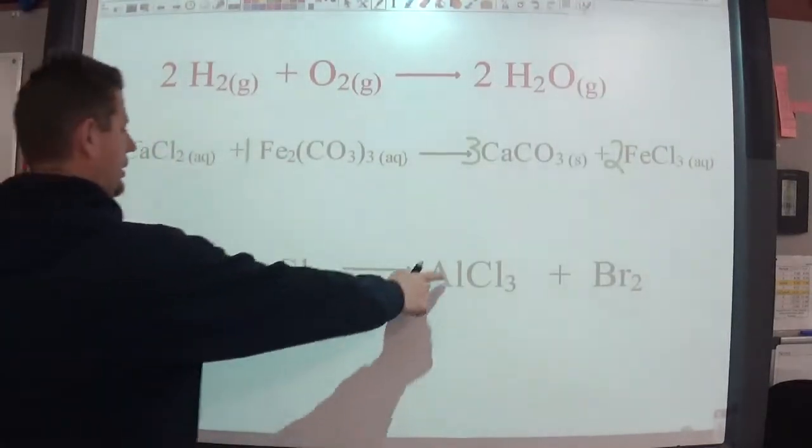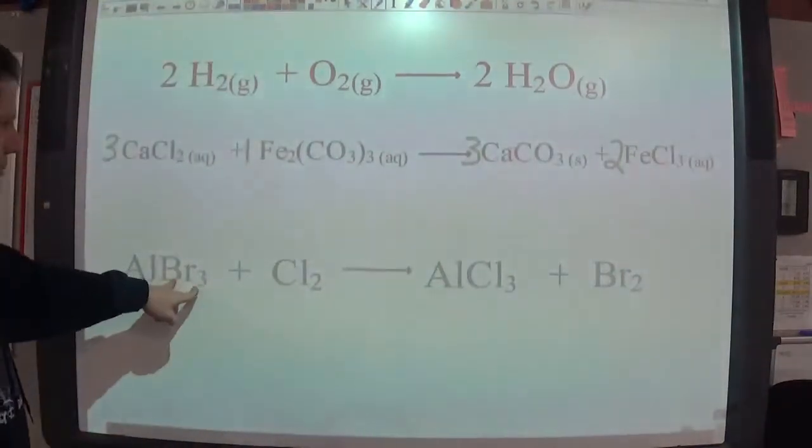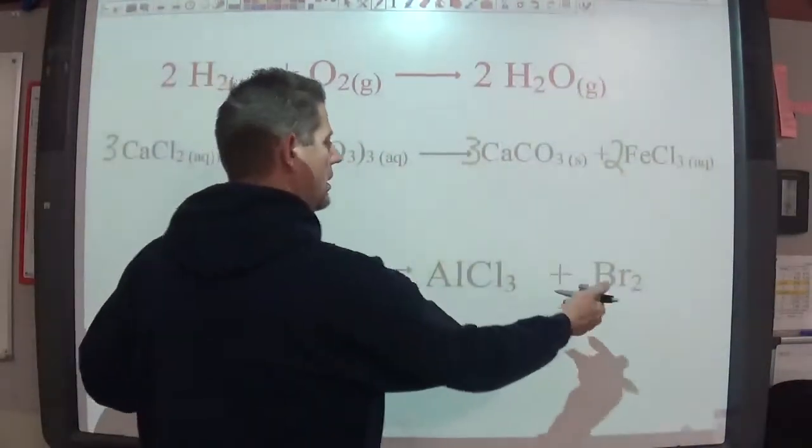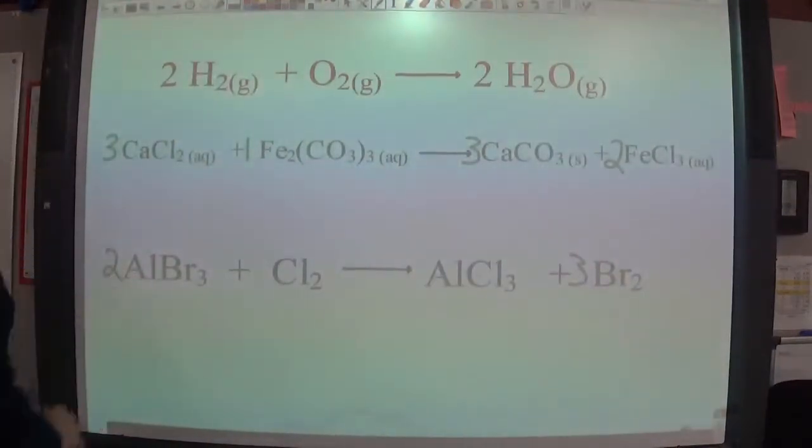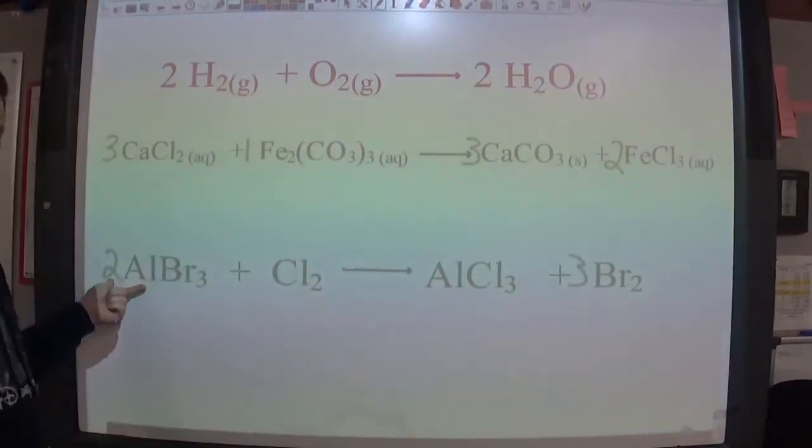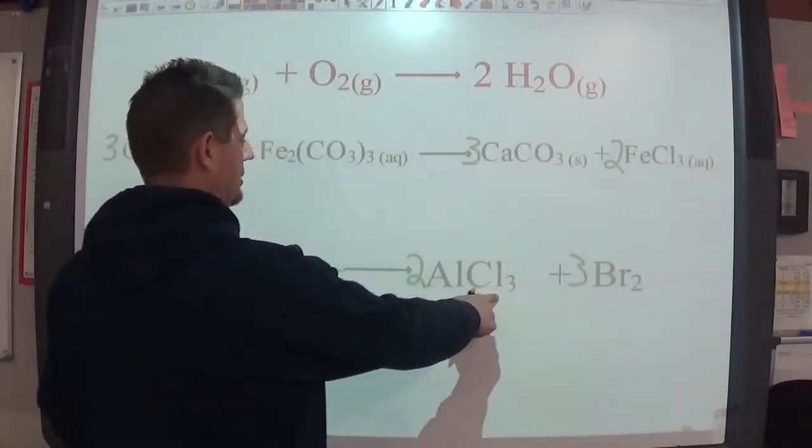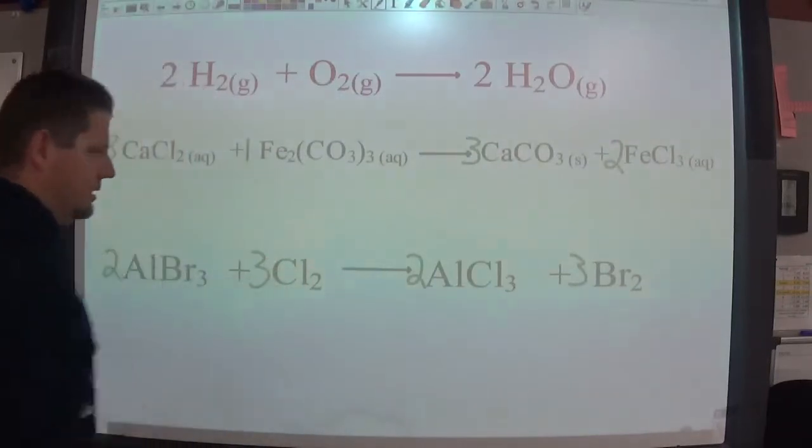So Al and Al are good. But Cl, Brs, there's all these threes and twos. Do you see there's three Brs here but two over there? So we need to put a three there and a two there. That gives me six Brs to go with six Brs. But it also gave me two aluminums. So I need to make two aluminums. Oh look at that. That gives me six chlorines which means I need six chlorines.